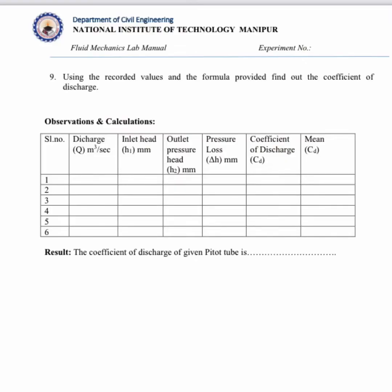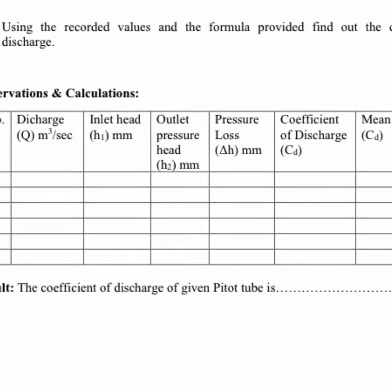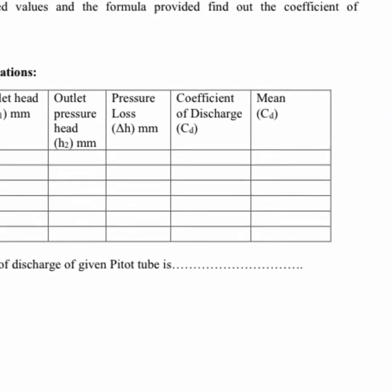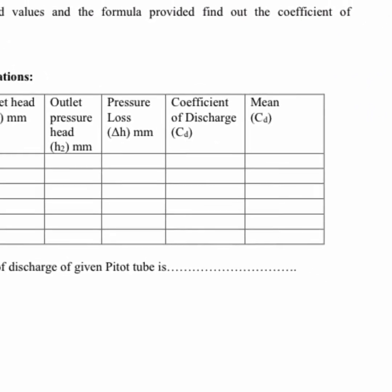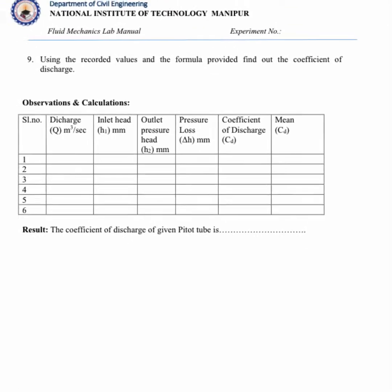After recording all the readings — the pressure head at the inlet and outlet, and the volumetric flow rate — we can find the inlet head, the outlet head, and the pressure loss. From these, we can easily calculate the coefficient of discharge.